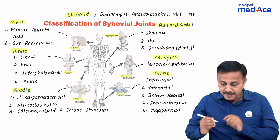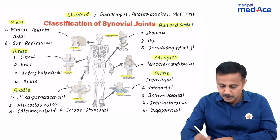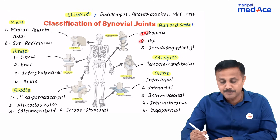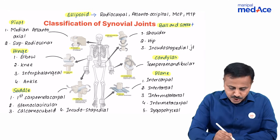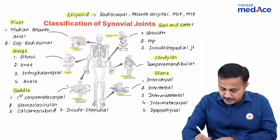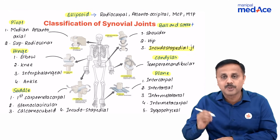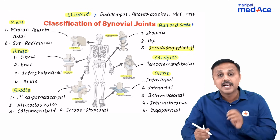When we talk about the ball-and-socket joint, we have the shoulder joint, hip joint, and one joint we must remember is the incudostapedial.